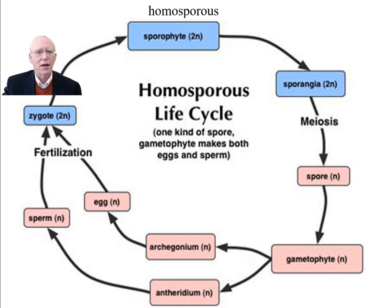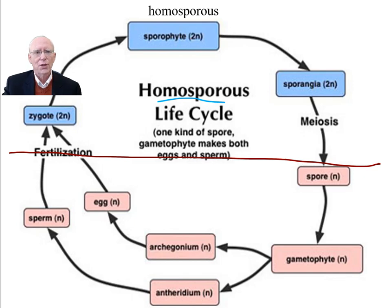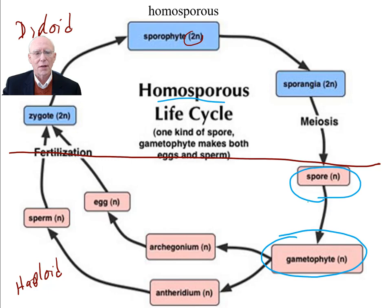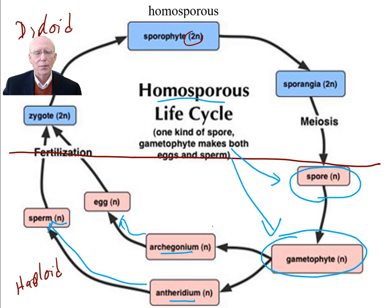Here is a homosporous life cycle. If we look at the haploid portion, let's draw a line to separate the haploid and diploid portions. Up here on top, the two end portions are diploid, and on the bottom it's haploid. In the haploid portion, we see there is one type of gametophyte and one type of spore. That gametophyte produces both archegonia and antheridia. The archegonium gives rise to the egg, and the antheridium gives rise to the sperm. That's the homosporous life cycle with a single type of spore.